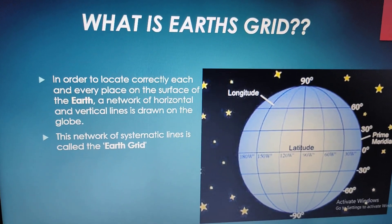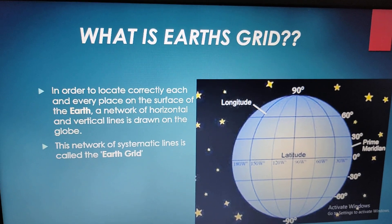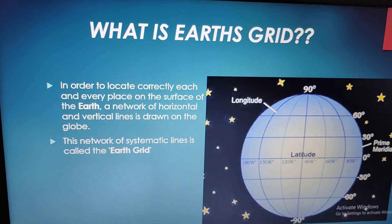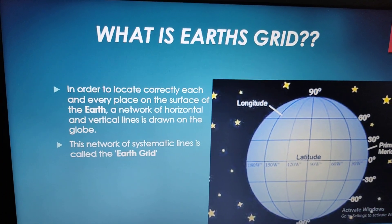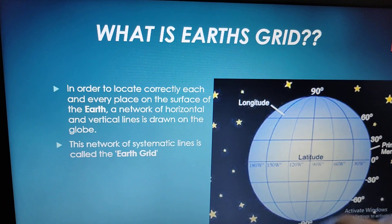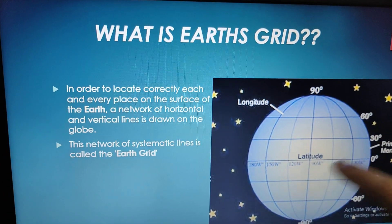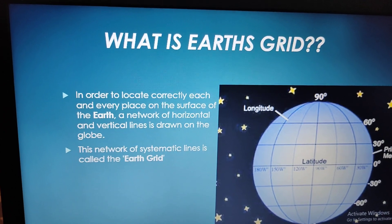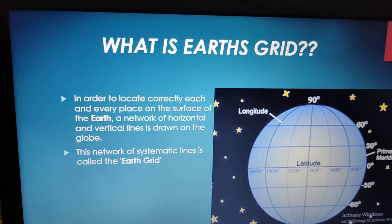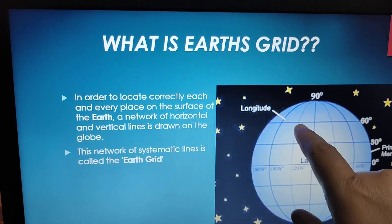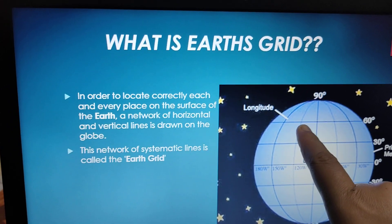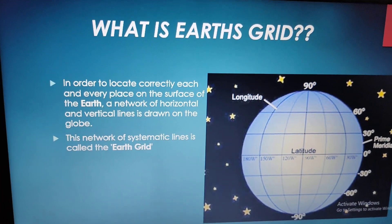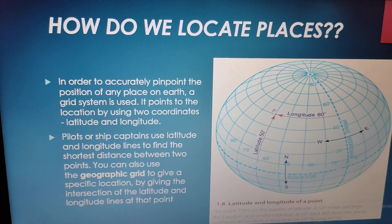Good morning everyone. Yesterday we were discussing about Earth's grid — what an Earth grid is. In order to locate correctly each and every place on the surface of the earth, a network of horizontal and vertical lines is used. These horizontal and vertical lines are your latitudes and longitudes. These latitudes and longitudes form a mesh-like network which is called the Earth grid.